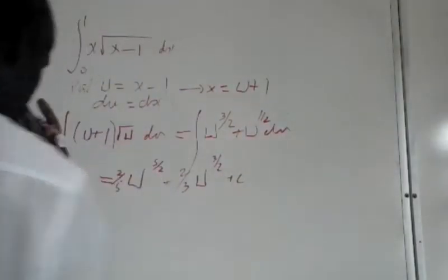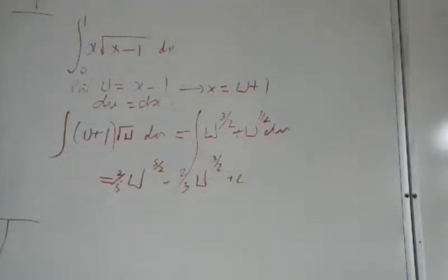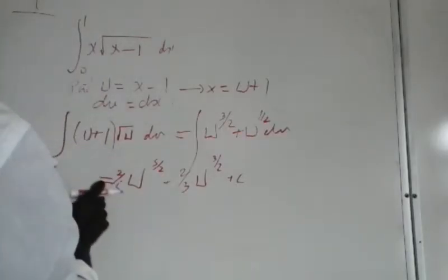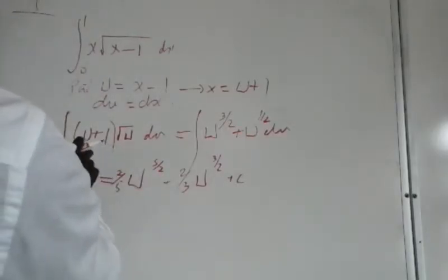And this is now plus u to the half plus 1, that will be 2 thirds u to the 3 over 2. That's plus c, but because limits are given, the c's will drop out. So we have 2 fifths u to the 5 over 2 plus 2 thirds u to the 3 over 2, and that's between 0 and 1.